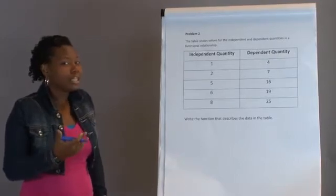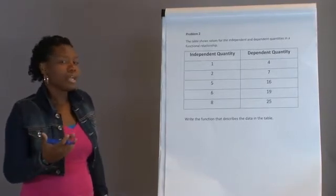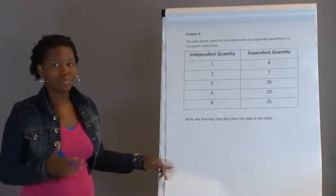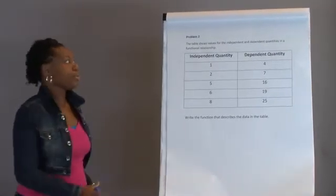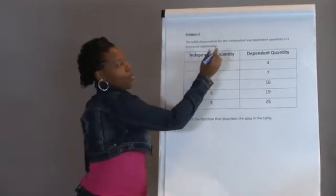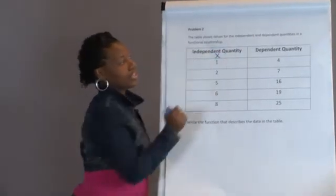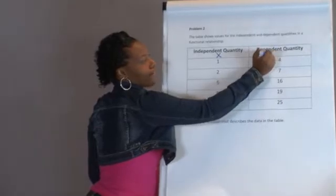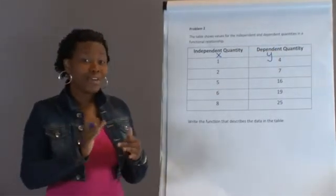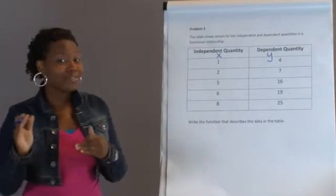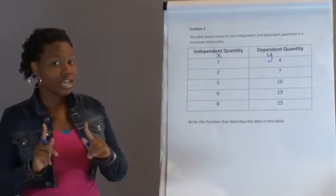So this problem says the table shows values for the independent and dependent quantities in a functional relationship. Write the function that describes the data in the table. So this one is probably a little bit harder, simply because they don't give you the equations. But it doesn't mean that you can't do it.